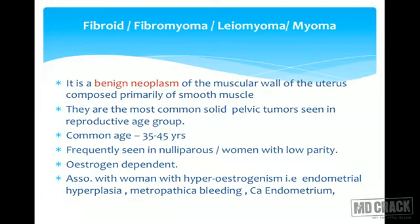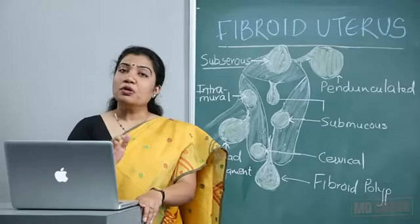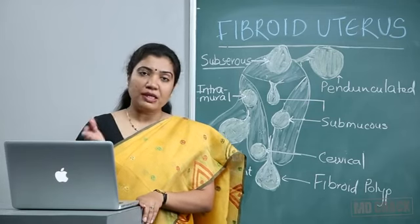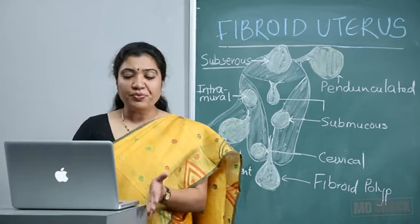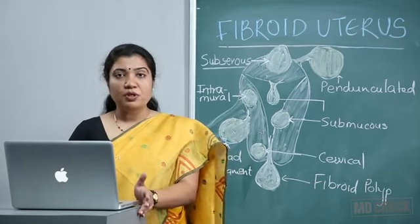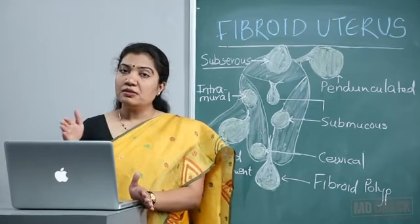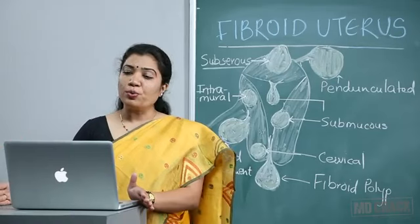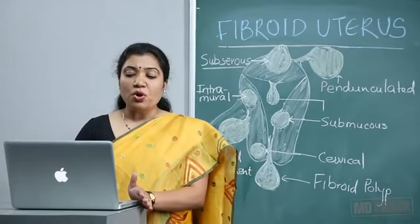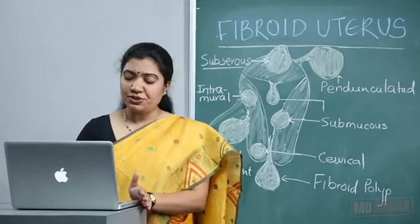They are estrogen dependent tumors — this is an important point. The fibroid grows whenever there is excessive estrogen and is associated with women with hyperestrogenism. So you can always guess that clinical conditions likely to be associated with fibroid are endometrial hyperplasia, metropathica bleeding, and CA endometrium — all hyperestrogenic conditions.